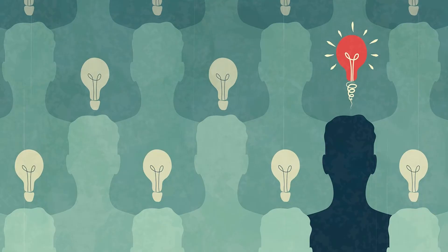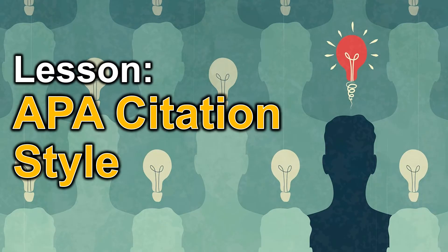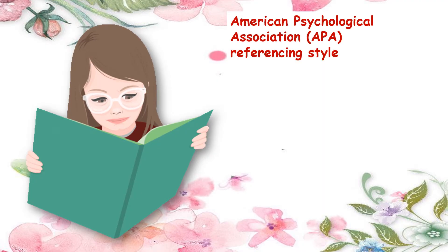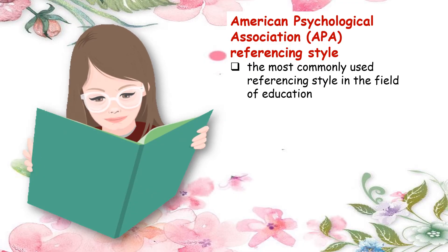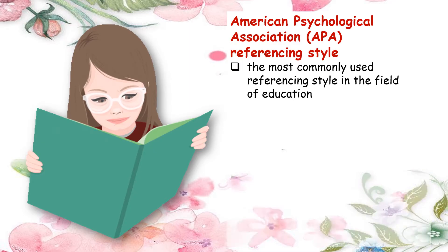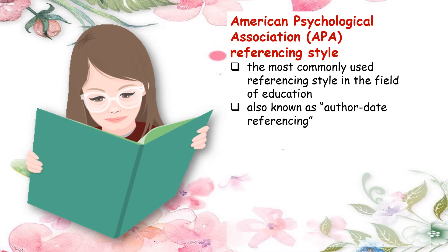Our lesson today is APA, or APA citation style. In the previous lesson, you have learned about the types of plagiarism and how to paraphrase. Now you are ready to use in-text and reference citation style. American Psychological Association, or APA, referencing style is the most commonly used referencing style in the field of education. It is also known as author-date referencing.